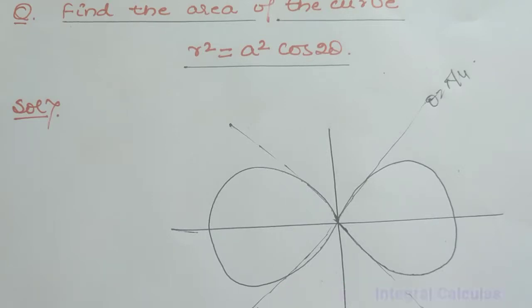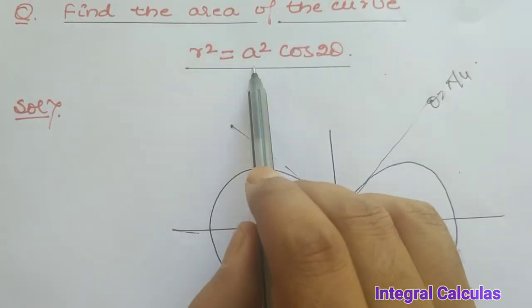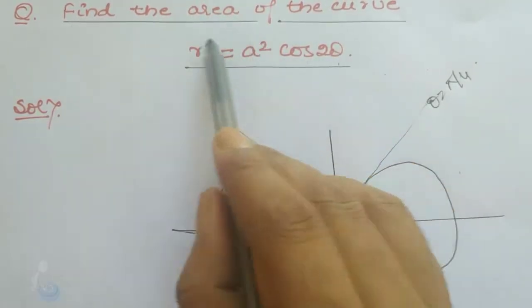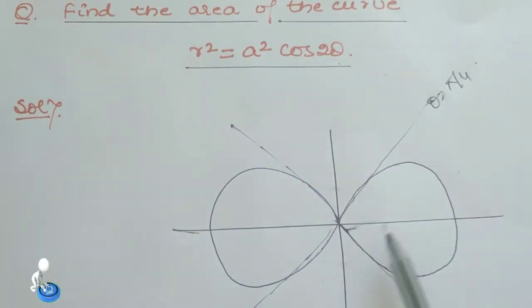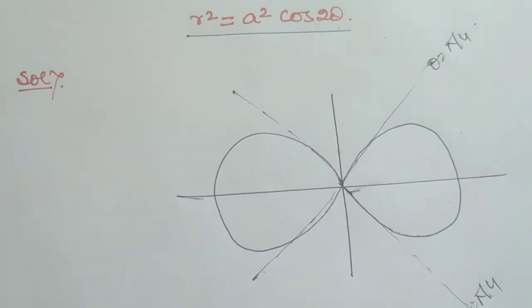What is the question? Find the area of the curve r squared equals a squared cos 2θ. I have explained this in the video on curve tracing. You should remember that the loop is like this.